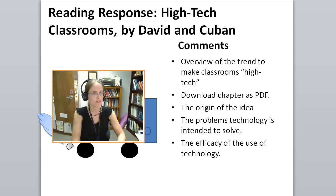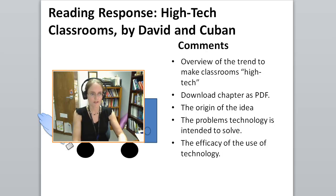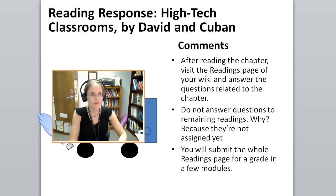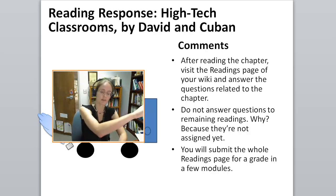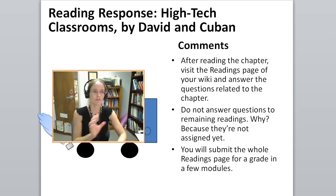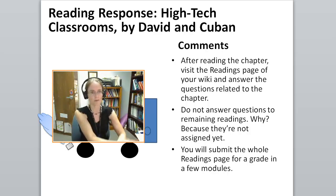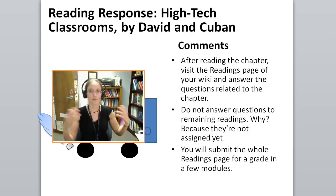In this module, there's a chapter I want you to read — it's about five or six pages long. It's a fabulous, simple overview of the push to have high-tech classrooms, written by David and Cuban, published in 2010. Download the chapter as a PDF. You'll learn about the origin of the idea of a high-tech classroom, what problems technology is intended to solve, and some comments about the efficacy of technology use. After completing the reading, visit the readings page of your wiki — you've set that up in your Wiki Foundation assignment — and answer questions related to the chapter. If you haven't set up your Wiki Foundation yet, you'll be completely baffled, so try to go in order.